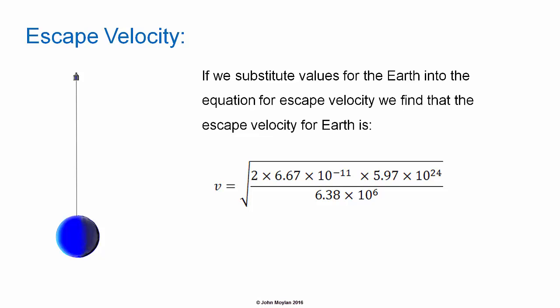This gives us V equals the square root of 2 times 6.67 times 10 to the minus 11, the universal gravitational constant, multiplied by 5.97 times 10 to the 24, the mass of the Earth in kilograms, over 6.38 times 10 to the 6, the average radius of the Earth in meters. This gives us a value for the escape velocity of the Earth of 40,200 kilometers per hour, or 1.12 times 10 to the 4 meters per second.